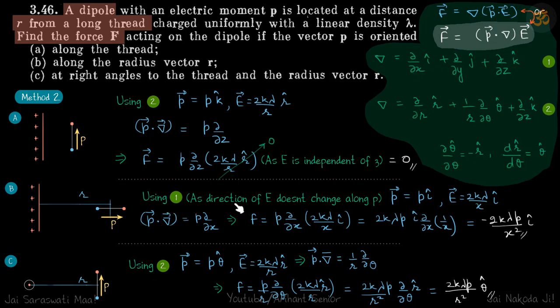So using one as direction of E does not change along p. So the dipole will not know if there is any other directional field because the field changing in its own direction is only dependent on x. So we are going to use the first equation. So p dot del, so only i cap component will survive. So it will be p d by dx. Now this operator on electric field.